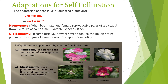In cleistogamous plants, bisexual flowers are formed which never open throughout the life of the plant. The male and female reproductive parts are never exposed in such flowers. Self-pollination is a rule in the case of cleistogamous flowers, and it can be seen in Carmenia.